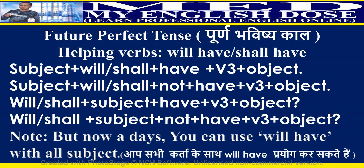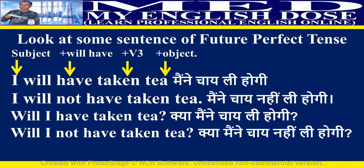Future perfect tense helping verbs are 'will have' and 'shall have'. Nowadays you can use 'will have' with all subjects. Sentence structure: Positive — subject plus will/shall plus have plus third form of a verb plus object. Negative and interrogative forms follow the same pattern with 'not' inserted accordingly. Examples: I will have taken tea. I will not have taken tea. Will I have taken tea? Will I not have taken tea?